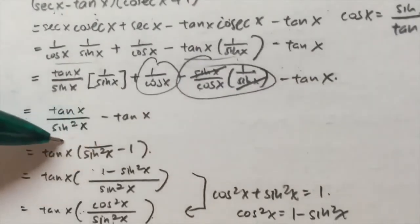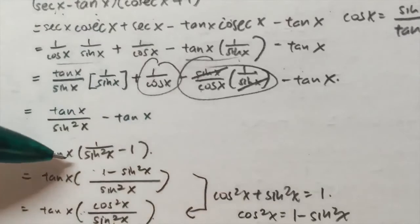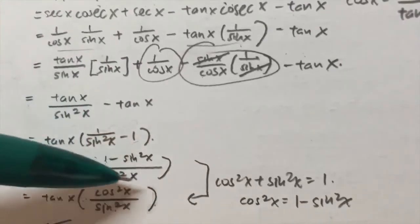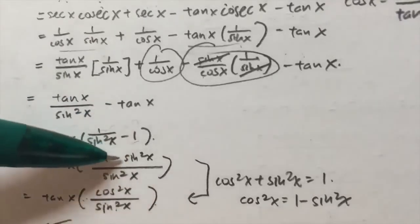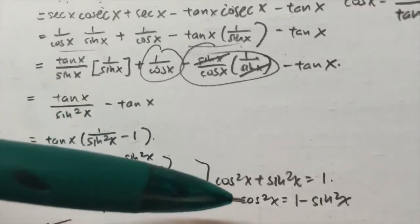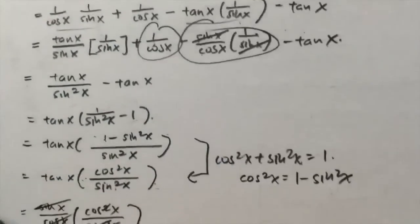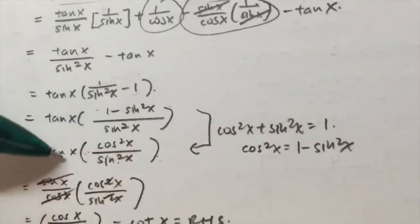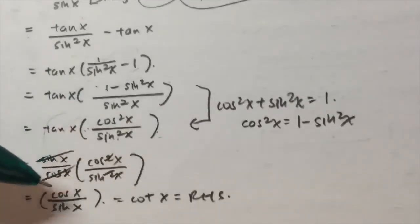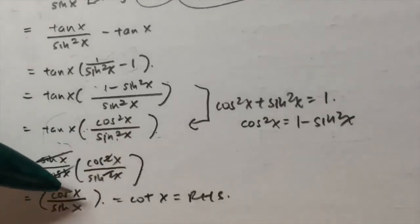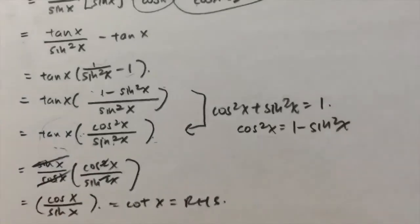So I have tan x over sin x times (sin²x minus 1), then factorize tan x out to get: tan x times (1/sin²x minus 1). Combining gives cos²x over sin²x. Then I convert tan x into sin x over cos x and cancel out the sin x and cos x, leaving cos x over sin x — which is cot x.